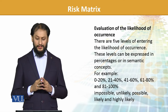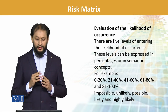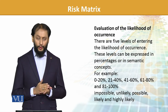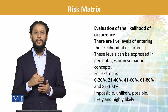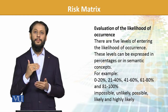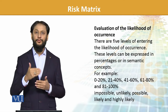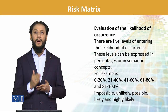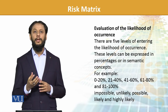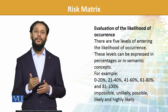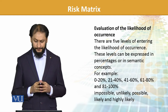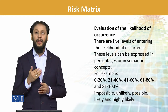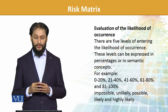For evaluation of likelihood of occurrence, there are five levels of entering the likelihood. These levels can be expressed as percentages or semantic concepts. For example, zero to twenty percent, twenty-one to forty percent — these are categorized. These are five norms, though not necessarily — in some places you can keep 30-unit bands, or split into 33-percent portions. It's a choice, depending on need; it's not binding. The probabilities can be labeled as: impossible, unlikely, possible, likely, or highly likely. These occurrence factors are what we look at alongside the probabilities.